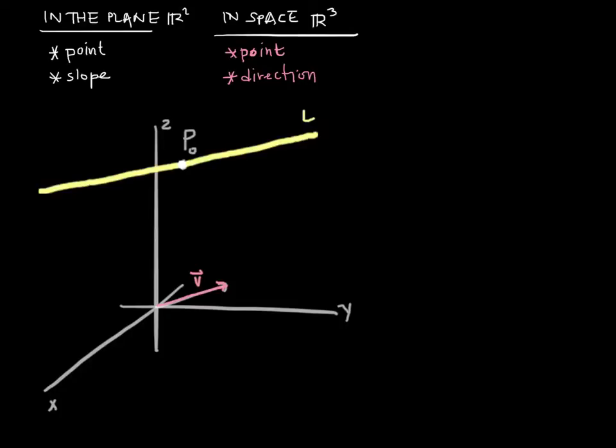Now let's take a look at the individual components that specify all of the points that lie on this line L. First, let's take a look at an arbitrary point that's on L. That just means any other point that's on L.